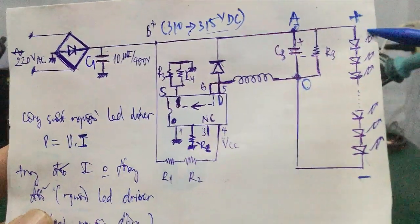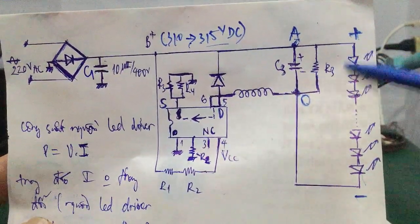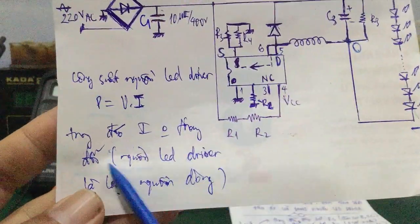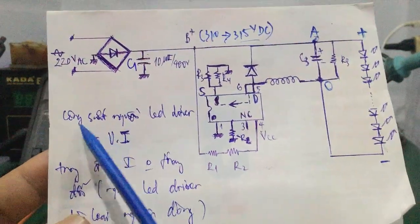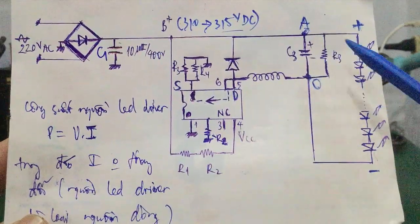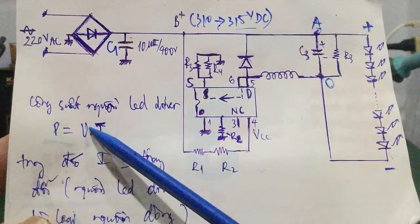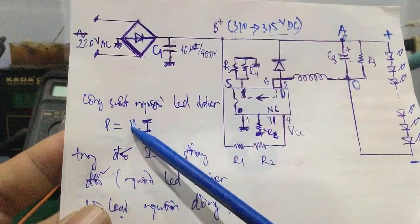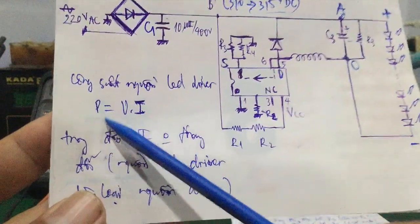Mục đích là làm cho mấy cái chiếc LED này tăng hoặc giảm công suất ngõ ra. Vì đây là nguồn LED driver là nguồn dòng, cái dòng điện ngõ ra sẽ không thay đổi, nhưng công suất của nguồn LED driver sẽ thay đổi theo điện áp U. Khi U tăng thì công suất sẽ tăng, khi giảm U xuống thì công suất sẽ giảm theo.